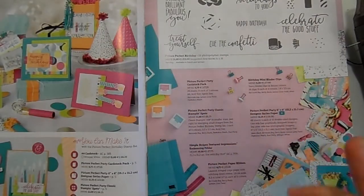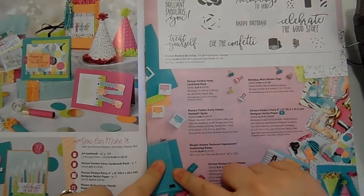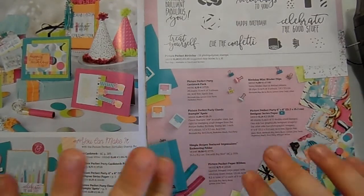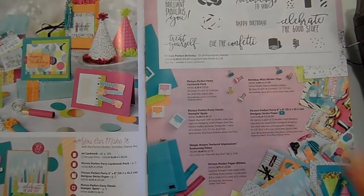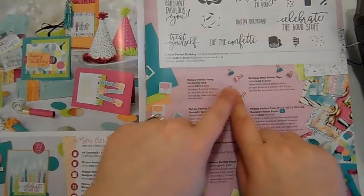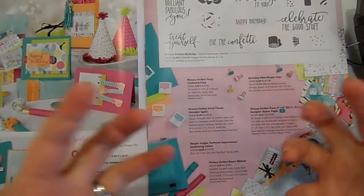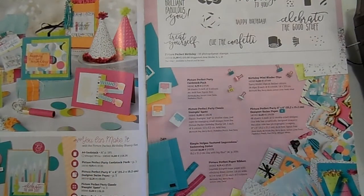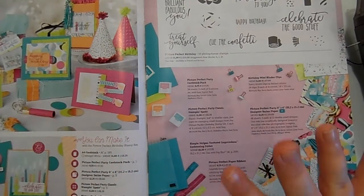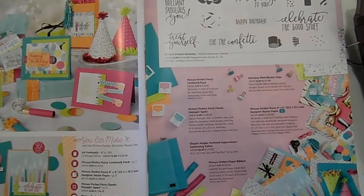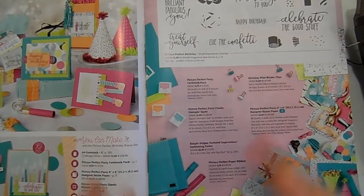Month three is the fabulous striped embossing folder, another Berry Burst ink pad and the binder clips that are so cute that I haven't even got them yet. And then on month four you will get the paper ribbon and your final ink pads that coordinate with that designer series paper, which are Pool Party and Peekaboo Peach.